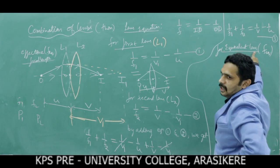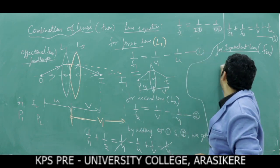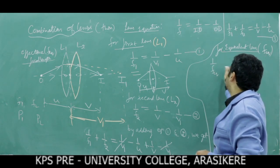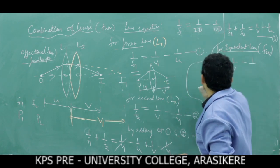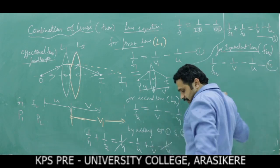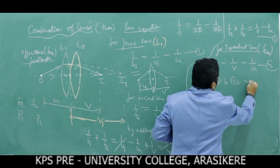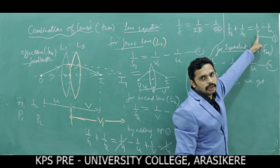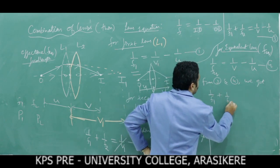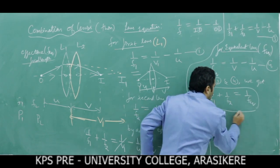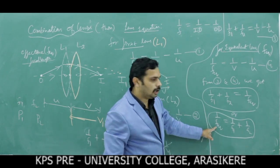From equation 3 and equation 4, the right-hand sides are equal: 1/V − 1/U appears in both. Therefore: 1/F1 + 1/F2 = 1/F_equivalent. So the reciprocal of the focal length of the equivalent lens equals the sum of the reciprocals of the individual focal lengths. By doing the combination, we reduce the total focal length, which increases the power and magnification.